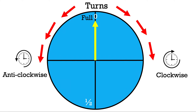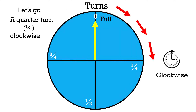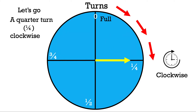Let's get started with the clockwise direction and do a quarter turn clockwise. We're going to move the spinner to the right and keep moving it until we reach a quarter turn — one section of the circle. We have now moved it to the one-fourth section.